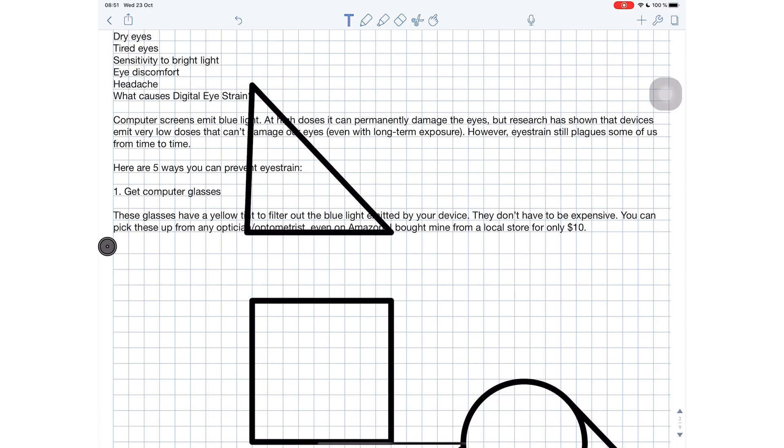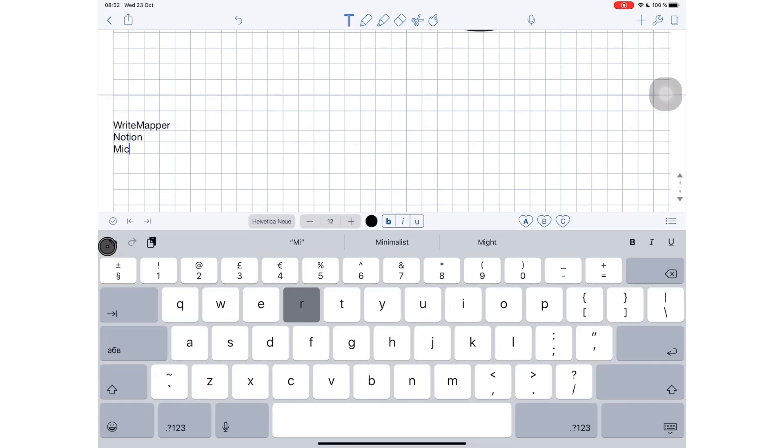Typing notes is not the right way to use Notability. If you want to type your notes, use applications that take typed notes: Write Mapper, Notion, Microsoft Word, Bear, Noted. All of those are great note-taking applications that actually focus on text and typing. So why not just use those?